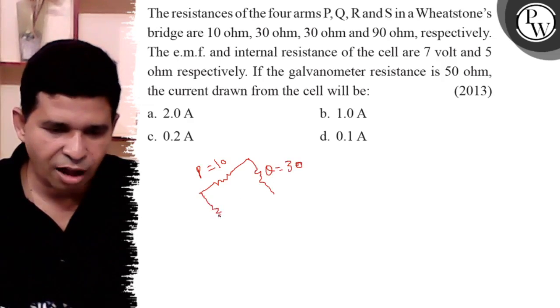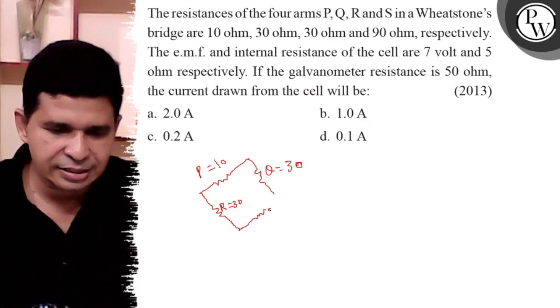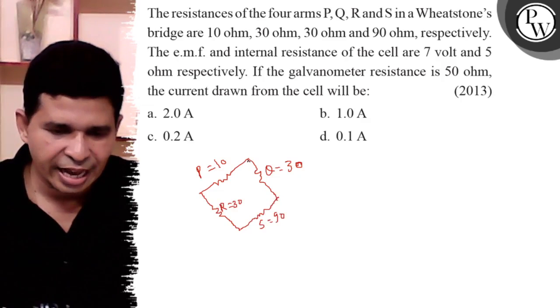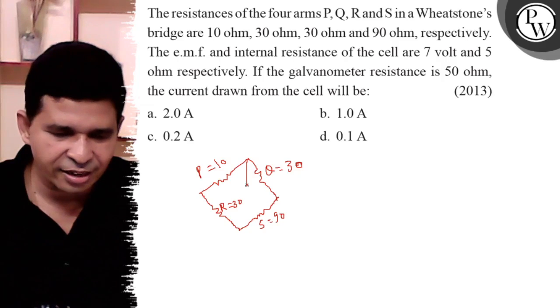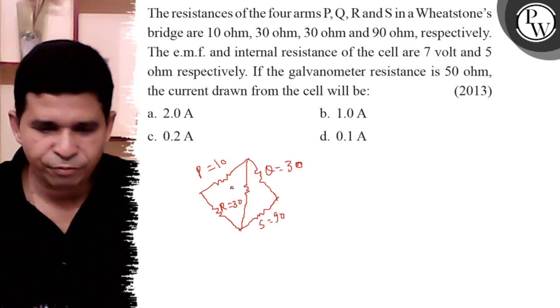Now here is the R resistance, R equals 30 ohm. And S, the S resistance equals 90 ohm. And here is the galvanometer resistance, given as 50 ohm.